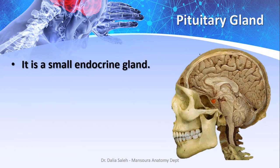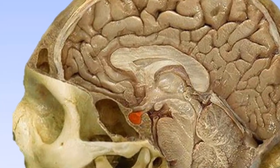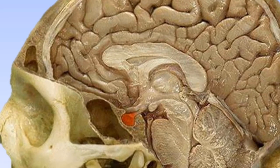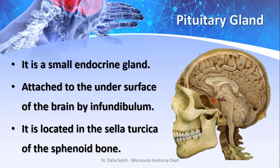The pituitary gland is a small endocrine gland attached to the undersurface of the brain by an infundibulum. It lies within a depression on the body of the sphenoid bone called the sella turcica. This hypophysial fossa is limited anteriorly by the tuberculum sellae and posteriorly by the dorsum sellae, and it is separated from the sphenoid sinus by a thin plate of bone.